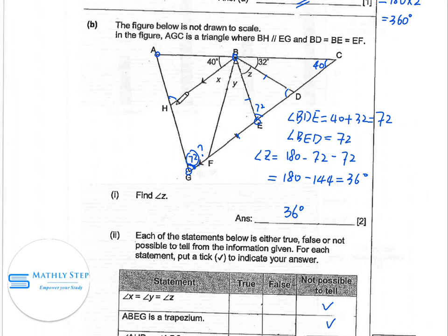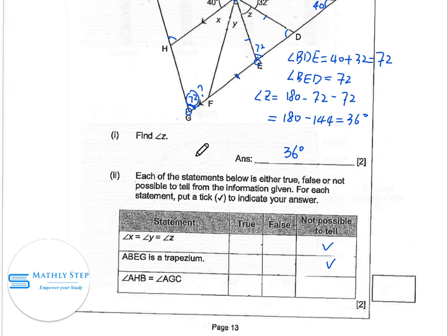Definitely, they are equal because BH and EG, they are parallel to each other and this is one line. So this angle and this angle are equal. So this is true. So this is for question 15.